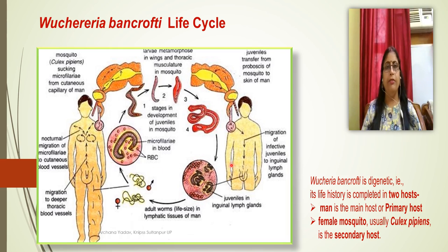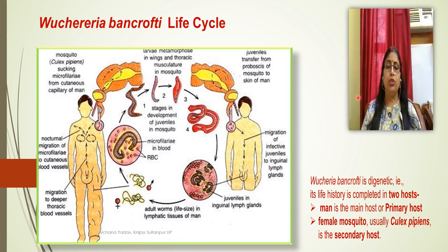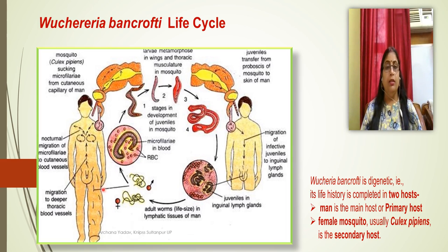Now we discuss the life cycle of Wuchereria bancrofti. It is digenetic, requiring two hosts: man and the female Culex mosquito. In this picture, male and female adult worms are found in the lymphatic vessels or lymphatic nodes of human beings.